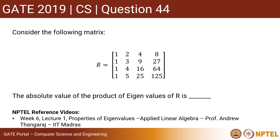This is GATE 2019 Computer Science question 44. The question states: consider the following matrix R. The absolute value of the product of eigenvalues of R is blank.